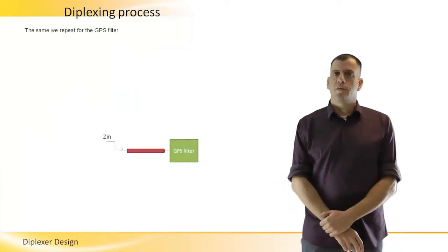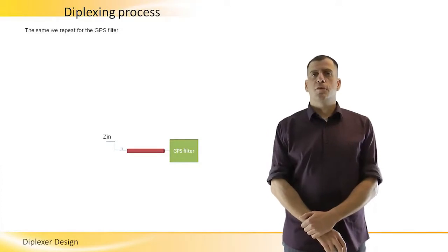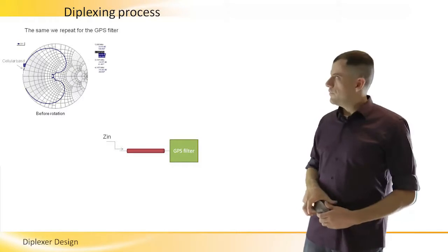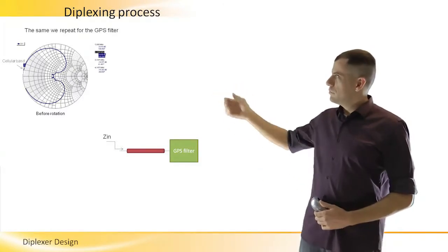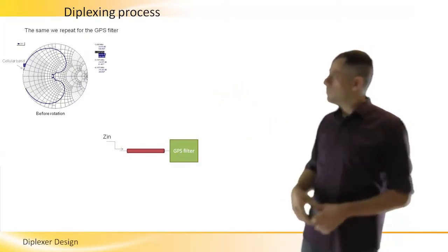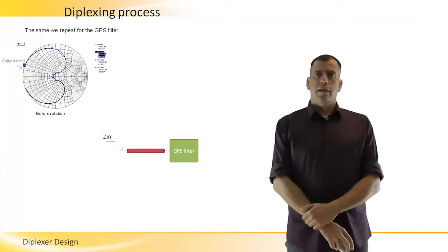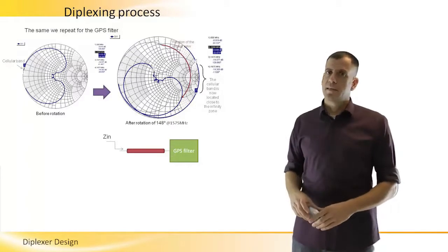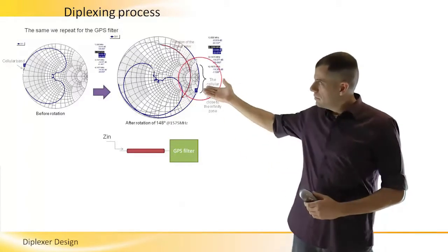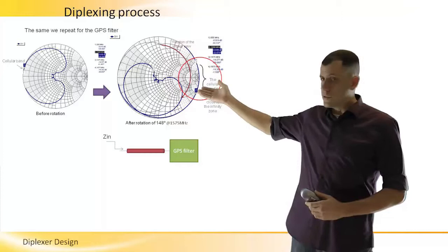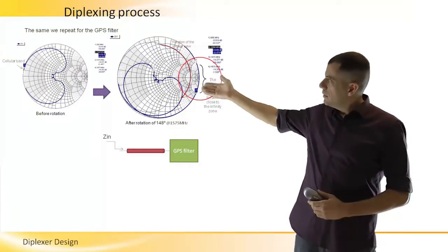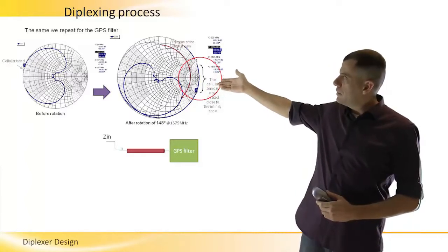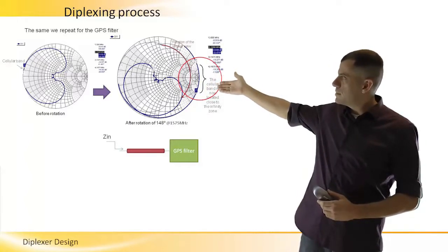As I mentioned, we repeat this process for the GPS filter too. First, we start from the original view of the filter on a Smith chart like before. Then, we rotate it using transmission line until the cellular part of the reflection, which is stop band I remind, is lying near the infinite point, near the very high impedance on the Smith chart.